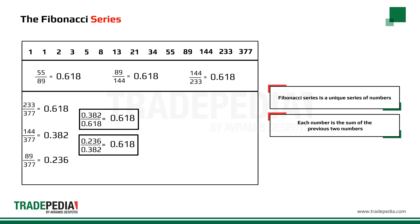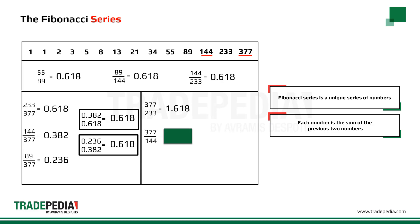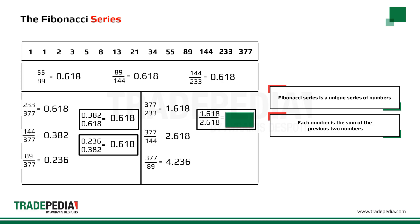What about if we did the opposite calculation and divided 377 by 233? We would find another magic number, the 1.618. If we left a second number in the middle empty and divide 377 by 144, we find the ratio of 2.618. And if we leave a third number in the middle and divide 377 by 89, we get 4.236. Again the relationship between ratios continues, as 1.618 divided by 2.618 is 0.618, and 2.618 divided by 4.236 is 0.618 again.